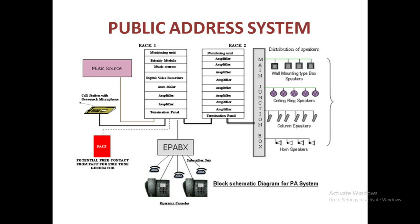The conventional block diagram of a PA system consists of multiple microphones at the input, given to a mixer, then to a voltage amplifier, tone control and processing circuits, a driver stage, a power amplifier, and finally loudspeakers. In summary: microphone input → mixer → voltage amplifier → tone control and gain processing → driver → power amplifier → loudspeaker.